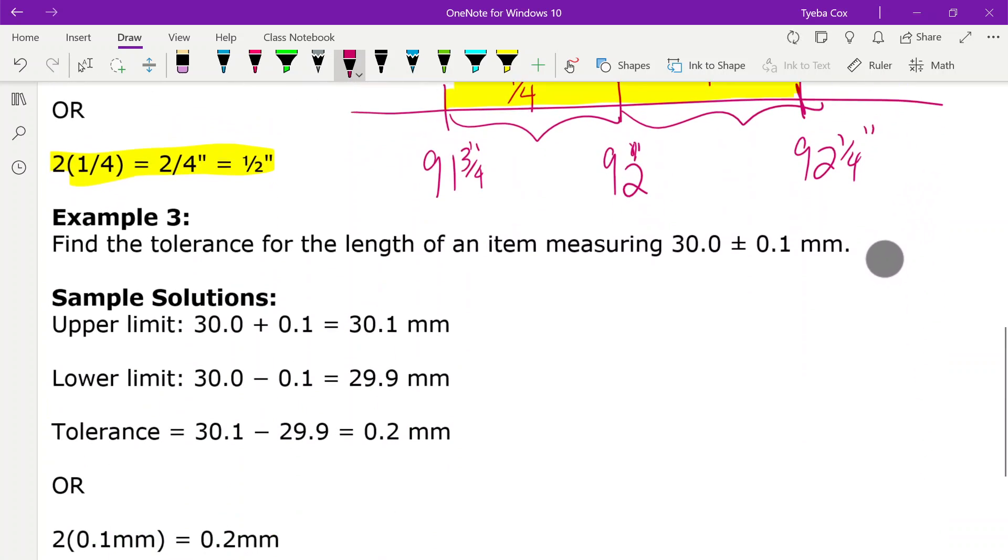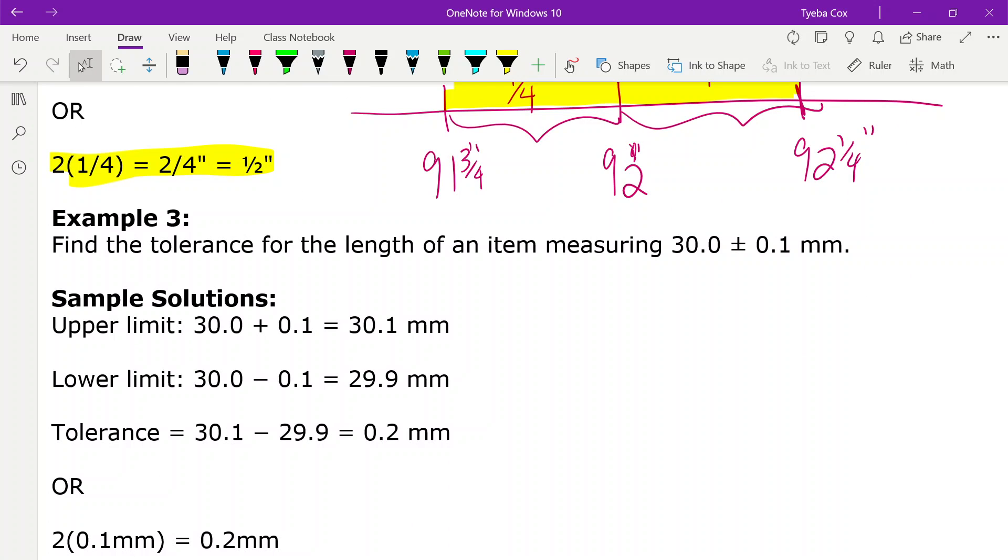And then the last example, we have example three, find the tolerance for the length of an item measuring 30.0 plus or minus 0.1 millimeters. So our upper limit, we're going to add the 0.1 and we get 30.1 millimeters.